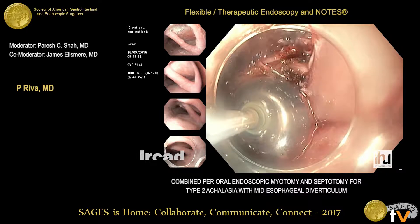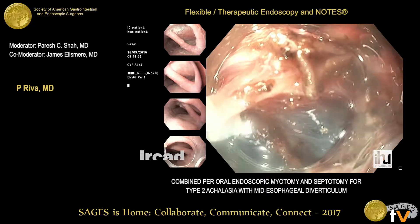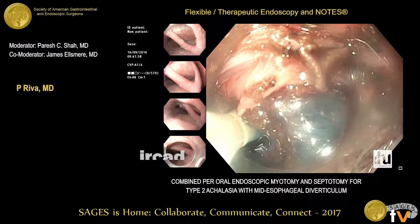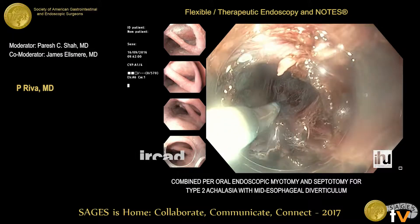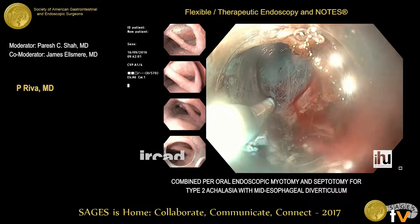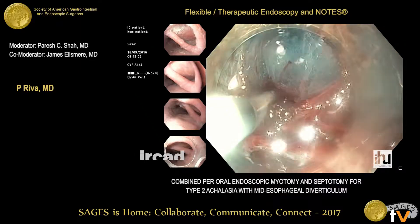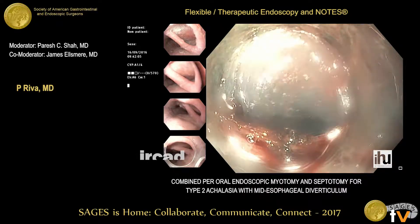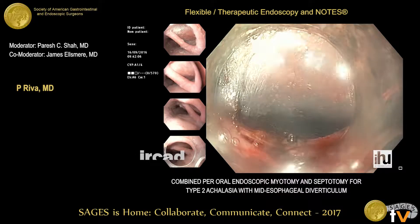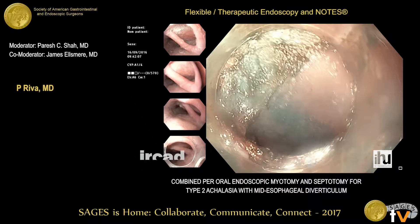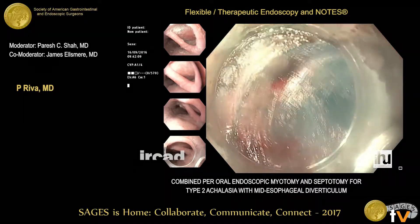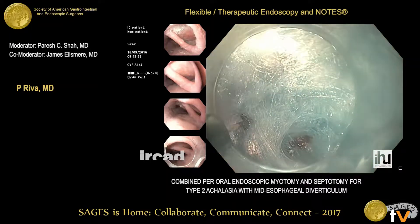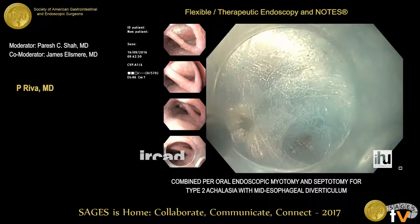The submucosal space is expanded using an injection of normal saline solution supplemented with 0.3% indigo carmine. The injection is done using a biliary balloon catheter, which facilitates entry into the tunnel and prevents fluid from backflowing.